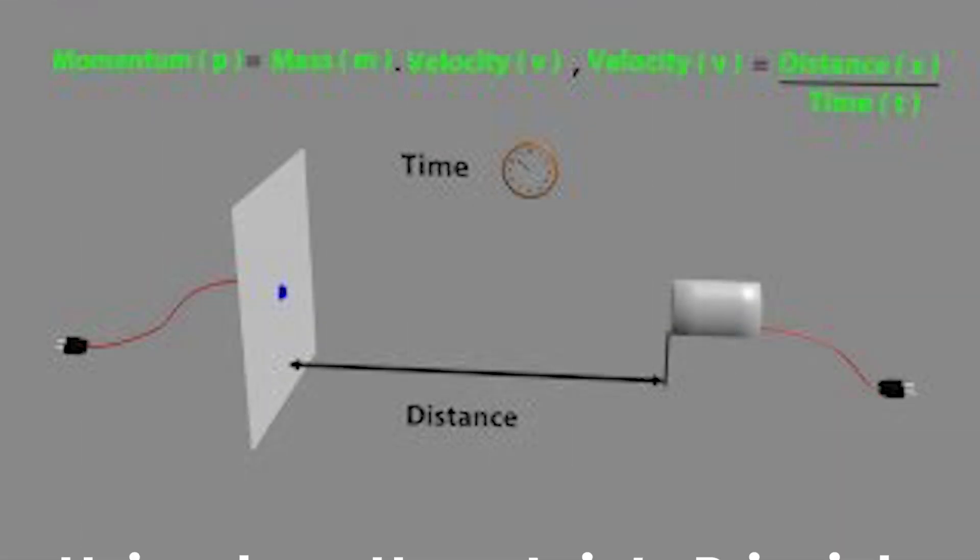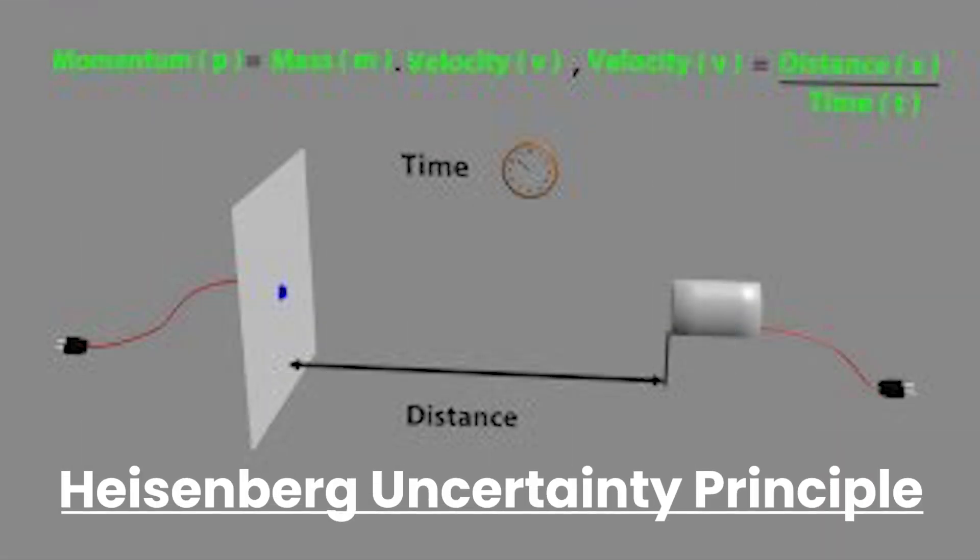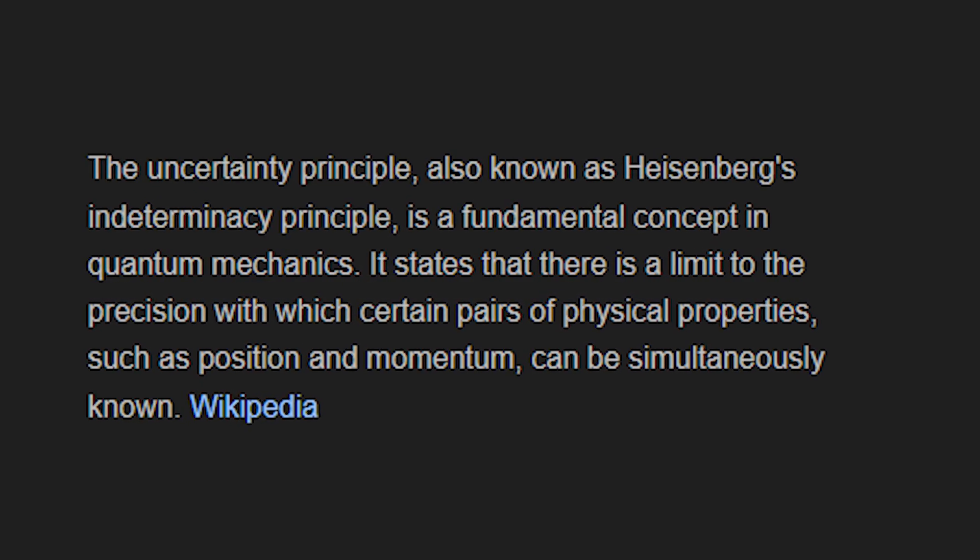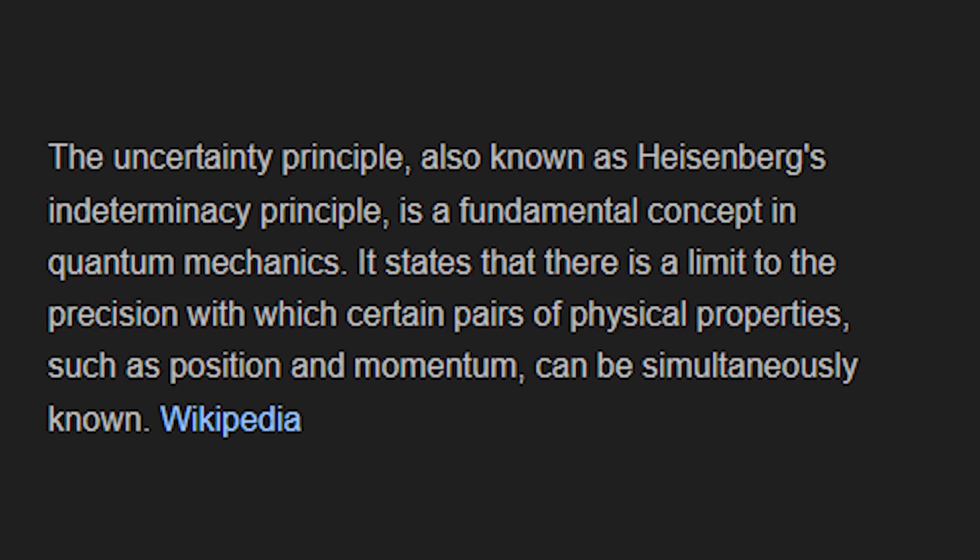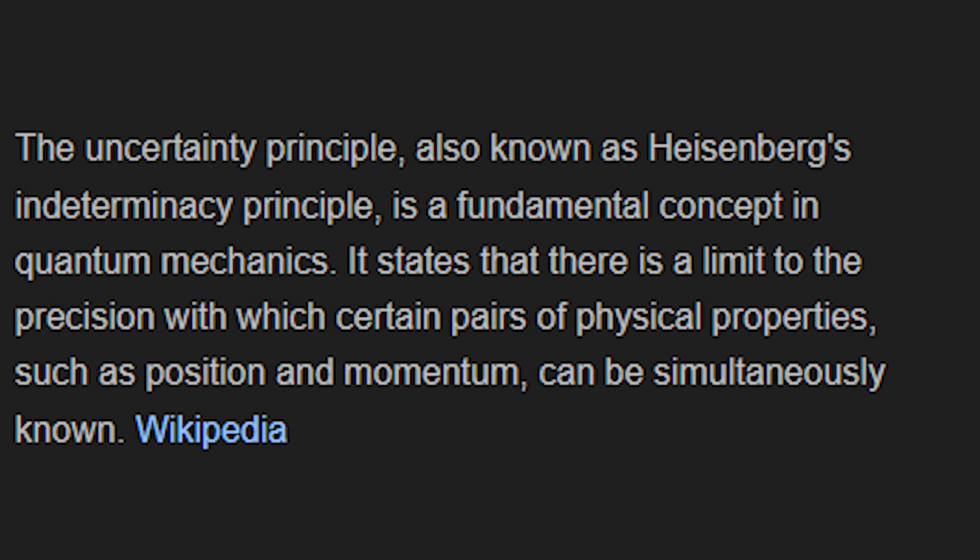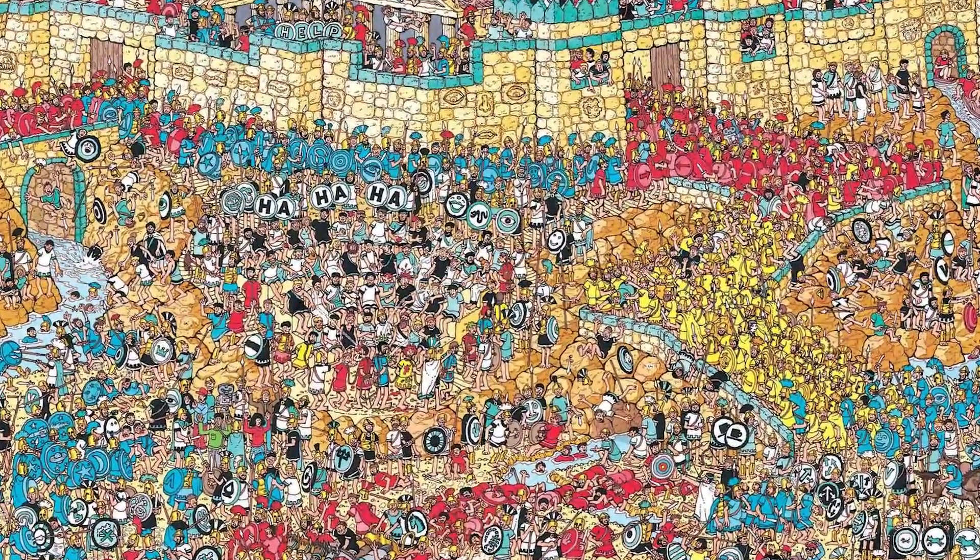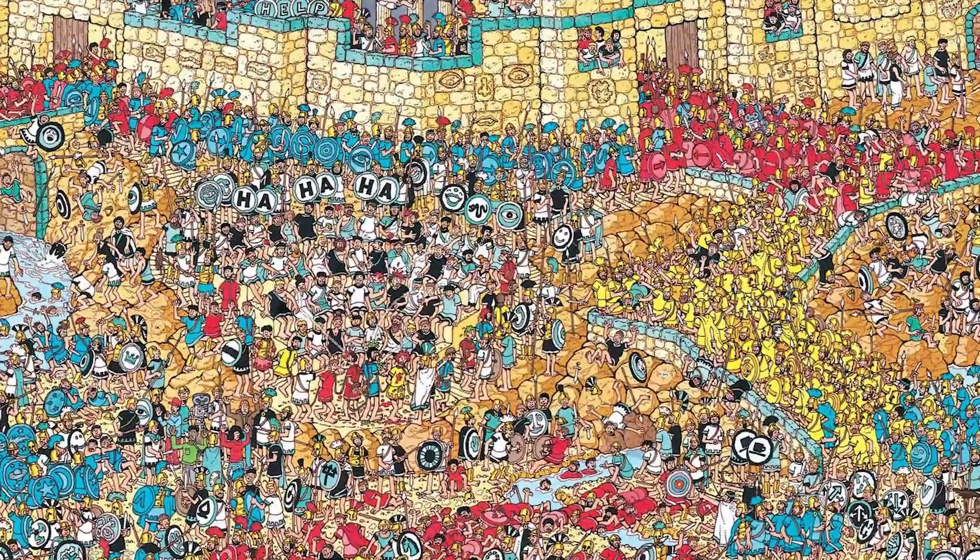Quantum mechanics also has the Heisenberg uncertainty principle, which says that the more precisely you know an object's position, the less precisely you know its momentum, and vice versa. It's like trying to find Waldo. If you know he's in the bottom left of the page, you lose track of exactly what he's wearing.